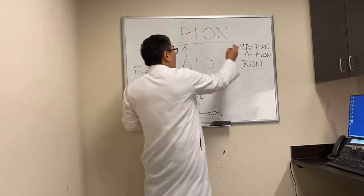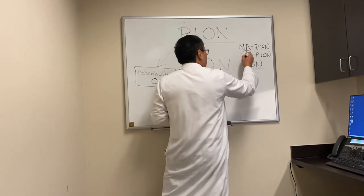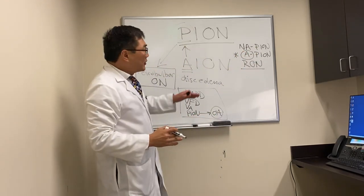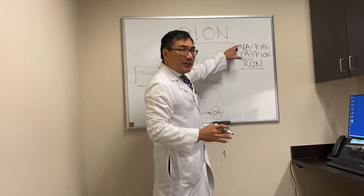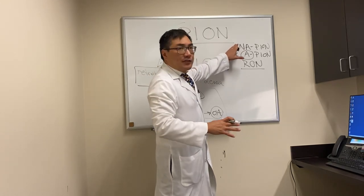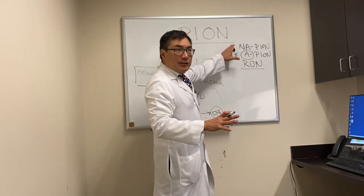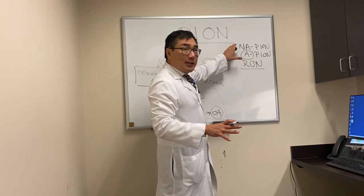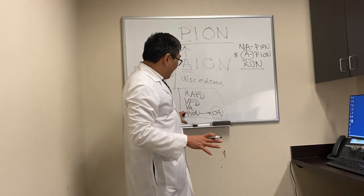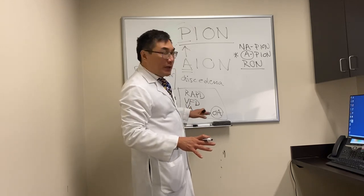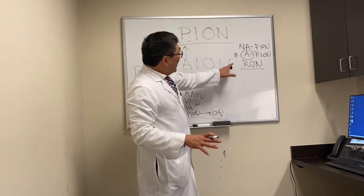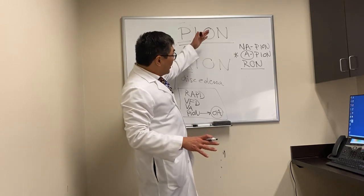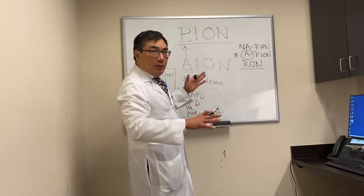Far and away in an elderly patient you should be thinking about arteritic PION. Non-arteritic PION does occur; usually it occurs in the setting of a surgical procedure like spine surgery or cardiac surgery — they wake up with loss of vision, an RAPD, a field defect, and loss of acuity, but a normal nerve.